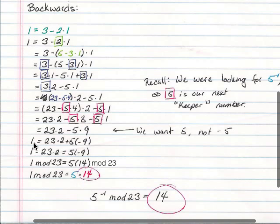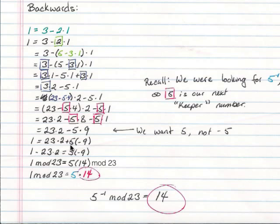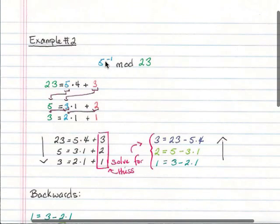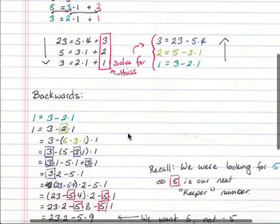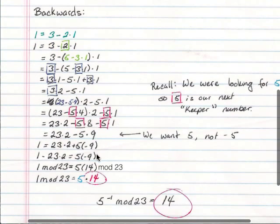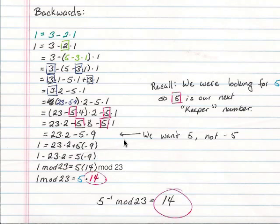So once I did that, I combined 5 terms. So I end up with 23 times 2 minus 5 times 9. So the 8 and the 1 combined to make this 9 right here. Then I copied down my 1 that I haven't been copying, and I rewrote it as 23 times 2 times 5, excuse me, plus 5 times negative 9. Like I wrote here we want 5, not negative 5, because right here we had 5, not negative 5. So as we all know, 5 times negative 9 is the same thing as negative 5 times 9. So I can rewrite it like that.